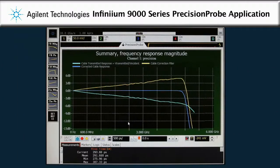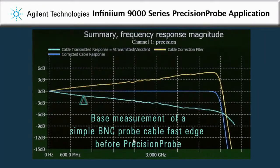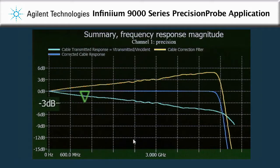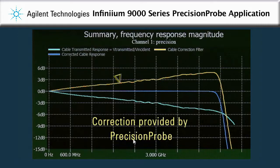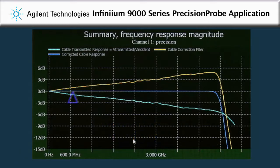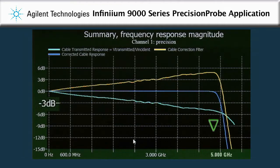Precision probe then displays the probe characterization for easy viewing. The bottom line represents the base measurement characterization of a simple BNC probe fast edge before applying precision probe — it is important to note that the 3 dB down point is about 3 GHz. The top line represents the correction provided by the precision probe application software, which effectively boosts the bandwidth to produce a calibrated center line, which becomes an extremely flat frequency response with a 3 dB down point of almost 5 GHz.